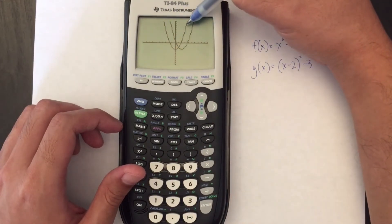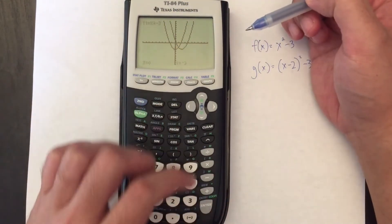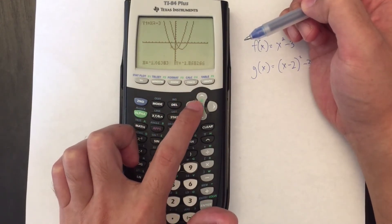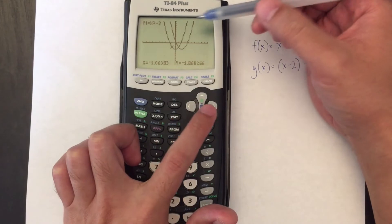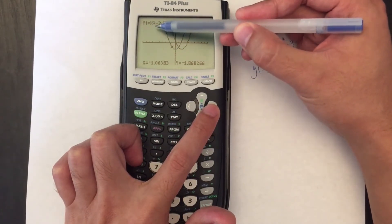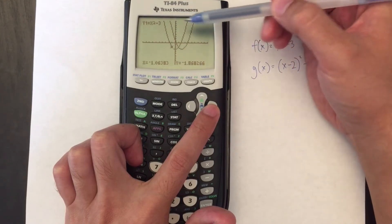The one on the left here is f(x) and how do I know that? Because when I press this button here, trace, my cursor will actually indicate that I'm on the graph on the left and up here in the corner says y1 = x² - 3.